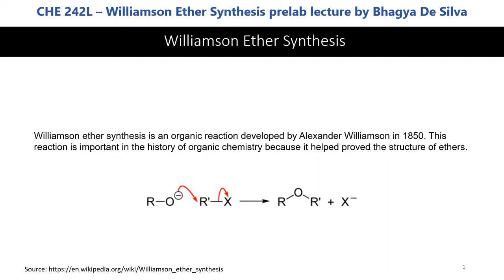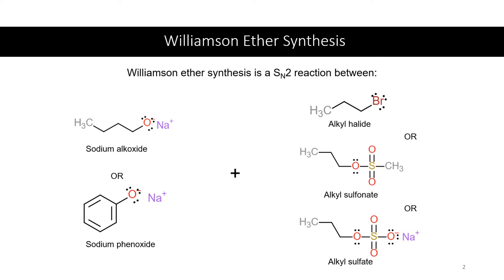This reaction is an SN2 reaction between an alkoxide and an alkyl halide type molecule, where you have a very good leaving group in order to form an ether. Williamson ether synthesis is an SN2 type reaction, which means substitution by a nucleophilic attack occurring between two molecules.